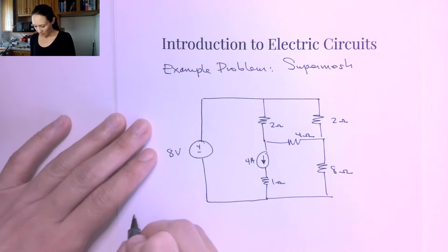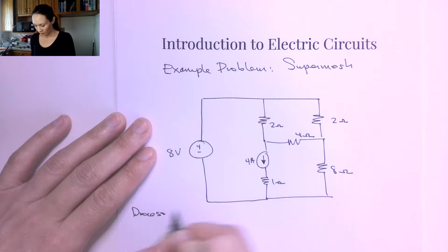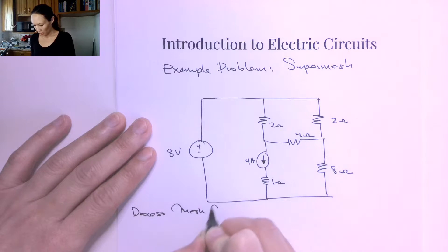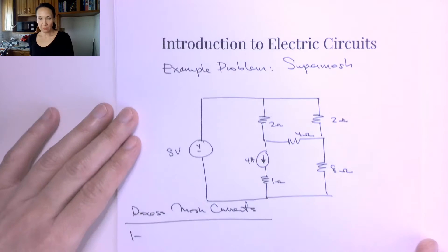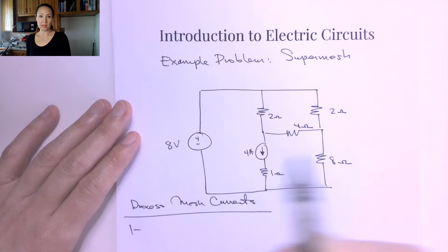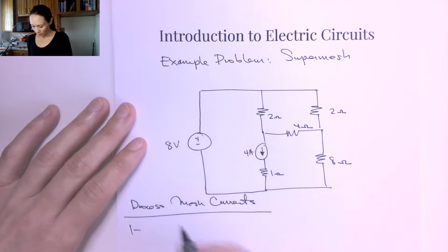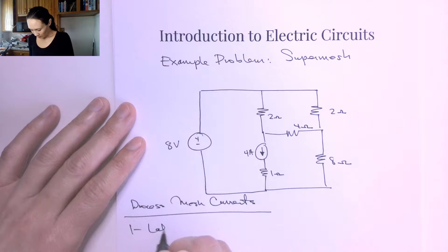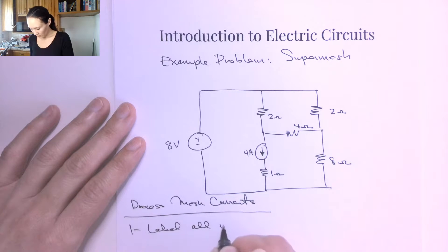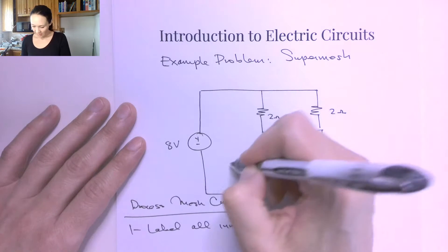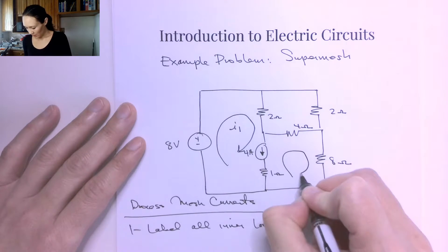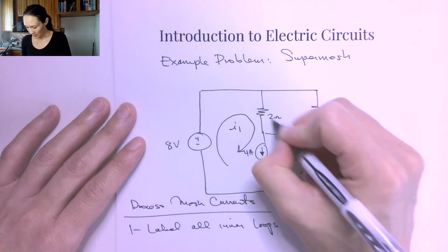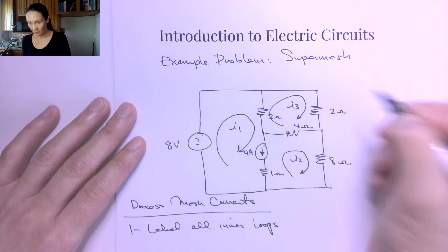The process for using mesh currents to solve this problem: step number one is we want to draw in and label all of the inner loops. I have a loop here — I'll call that I1, a loop here — this is I2, and a loop here — this is I3.